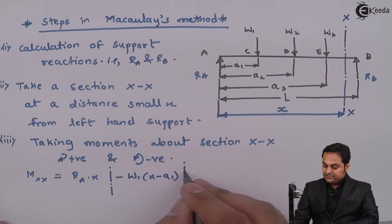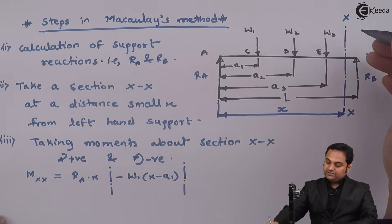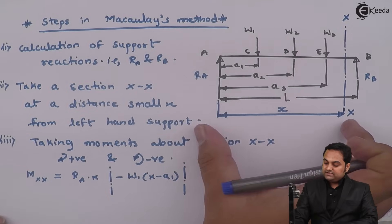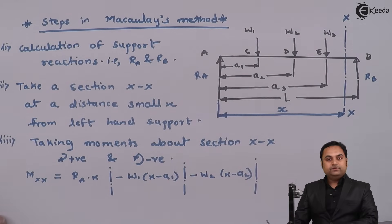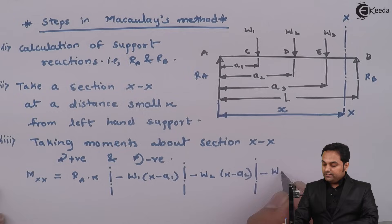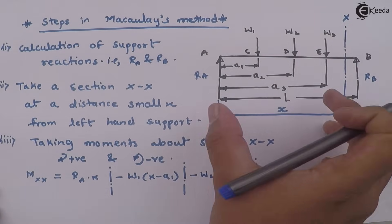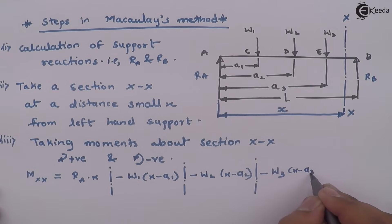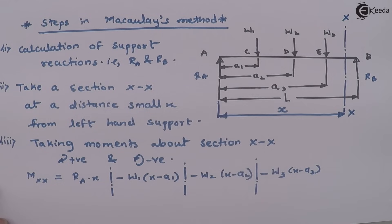W2 also produces an anti-clockwise moment and the distance between section X-X and W2 is x minus a2, so it is minus W2 into (x minus a2). Then W3 produces an anti-clockwise moment, so again negative: minus W3 into (x minus a3).